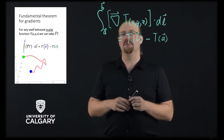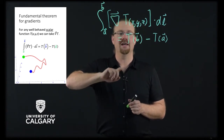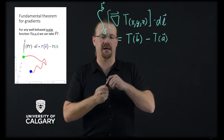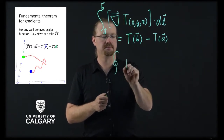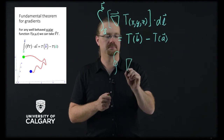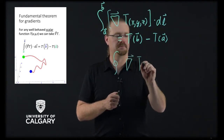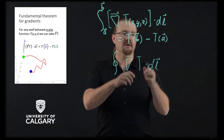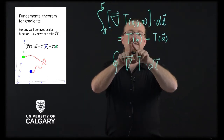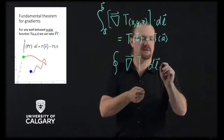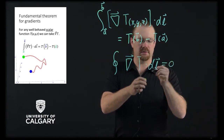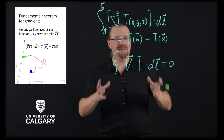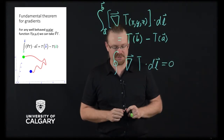There's another nice thing, though. Because this is some path, if a equals b we can have some closed path, and if a equals b then we're just saying that T of a minus T of a will wind up being zero. And this is going to have deep, deep physical implications.